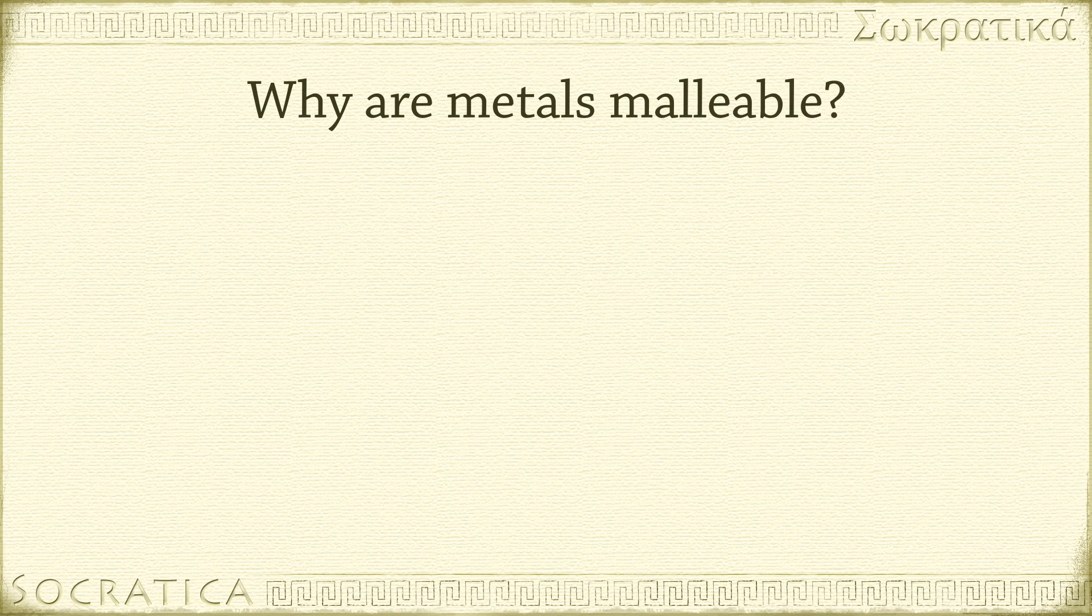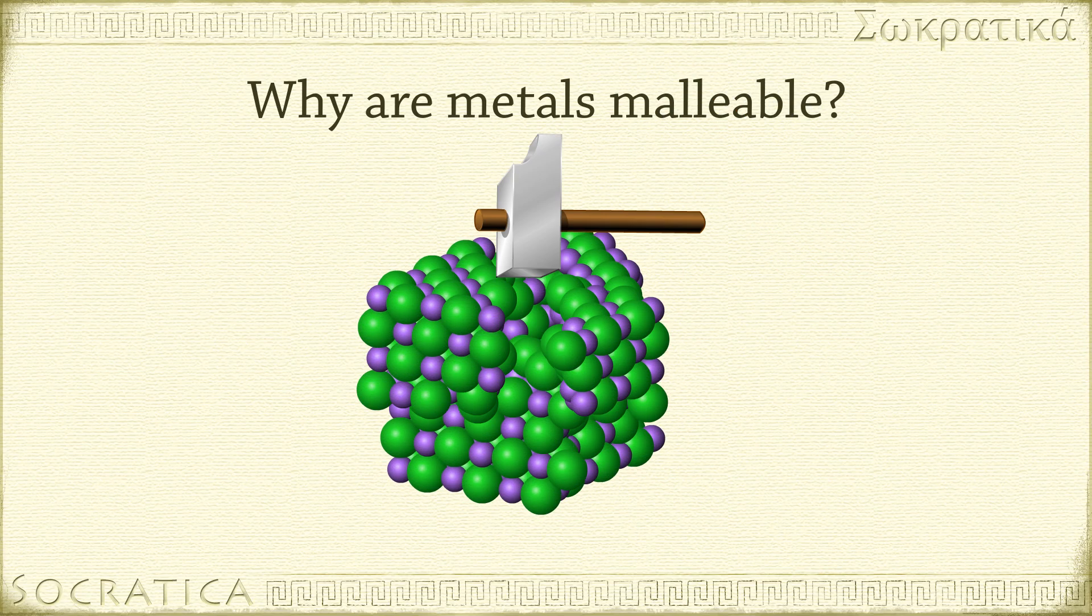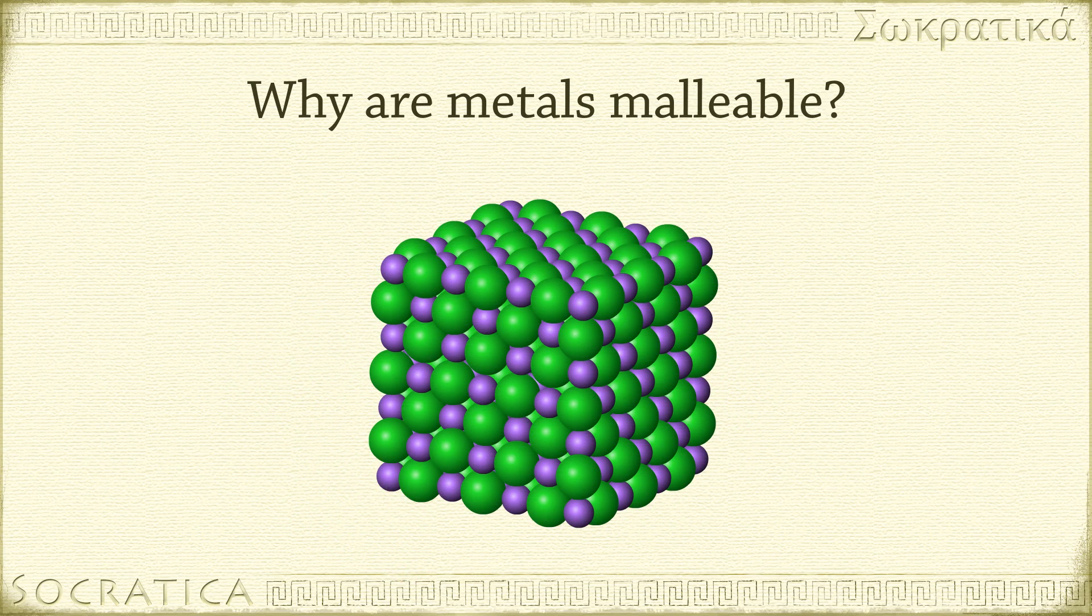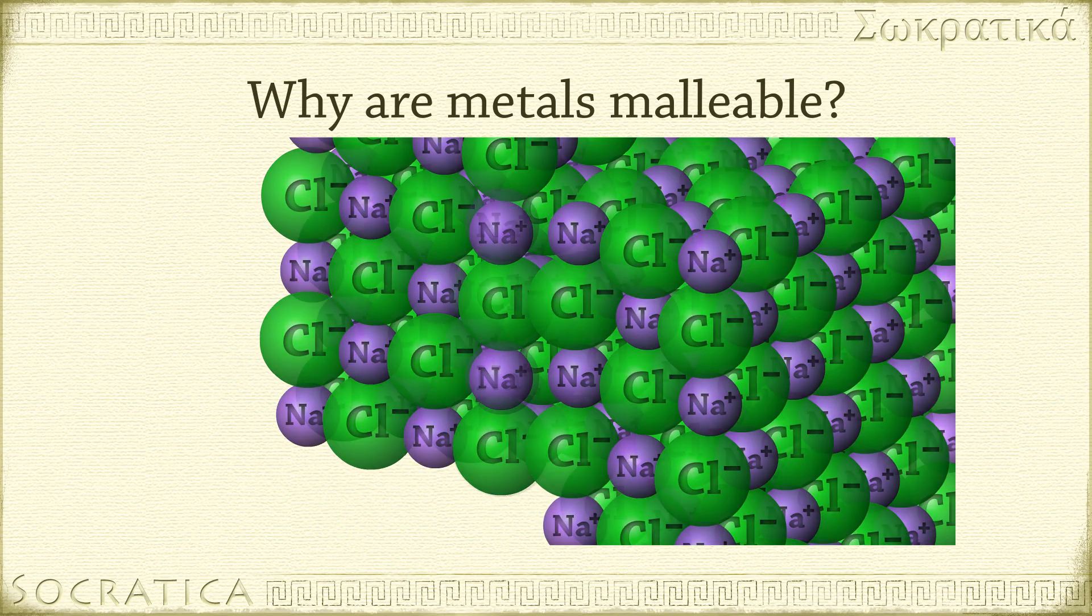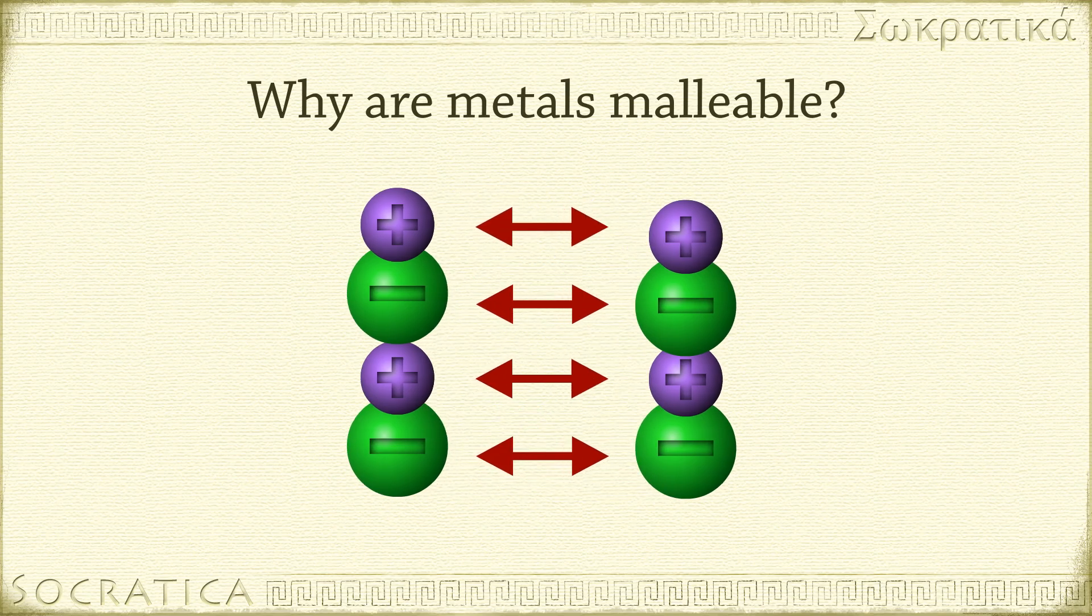The mobile sea of electrons also explains the malleable nature of metals. If you strike an ionic crystal with a hammer, it shatters. This is because the applied force pushes like ions close together. They violently repel each other, breaking the crystal apart.